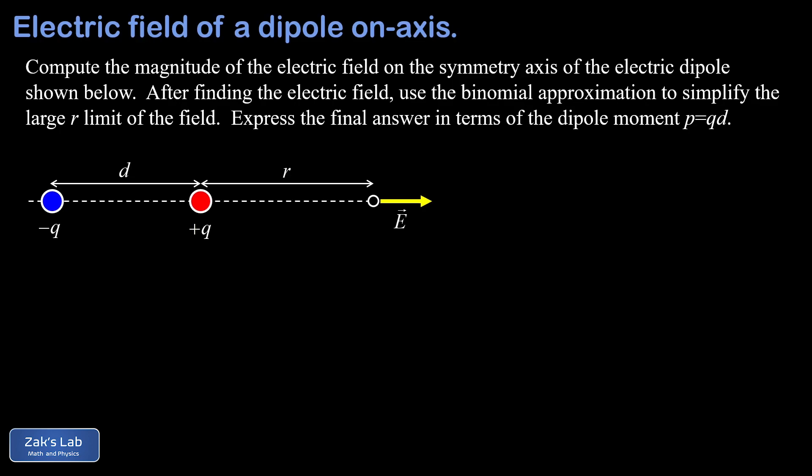and these opposite charges have a separation distance of d. We're going to define our observation point at a distance of r relative to the right-hand positive charge here, and we see the electric field points to the right out there, and that's because we're closer to the positive q that gives us a rightward contribution to the field than we are to the negative q which gives us a leftward contribution to the field.